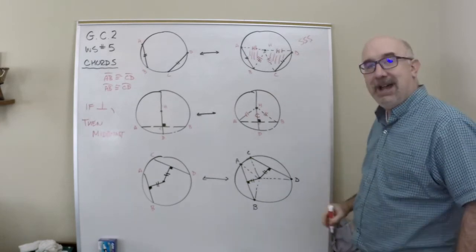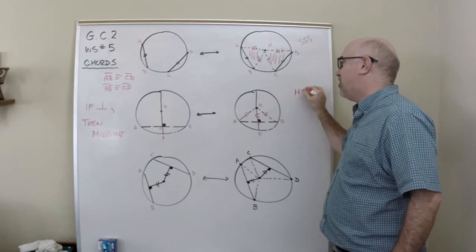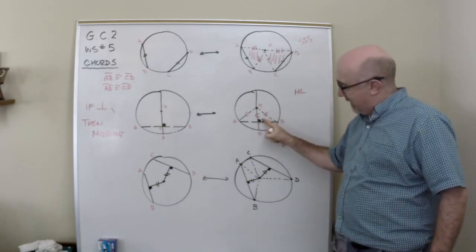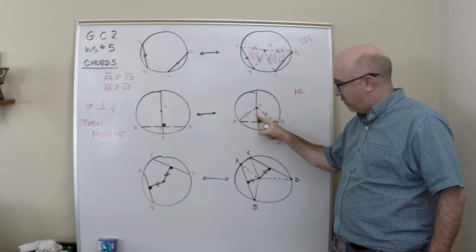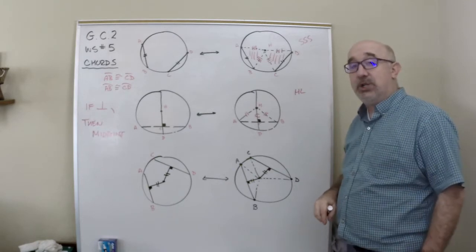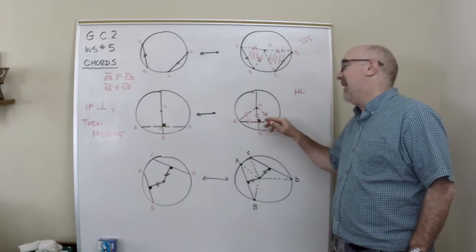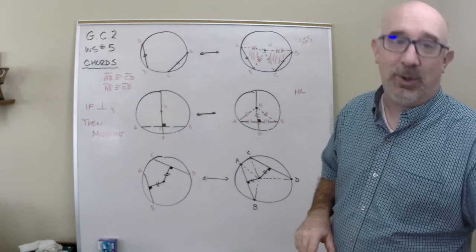So once again, I can prove that this and this are congruent by HL, hypotenuse leg. I have a 90 degree angle, I have the hypotenuse and one leg. Guess what? Those two guys are congruent, which means that this little length and this little length must be equal or congruent.